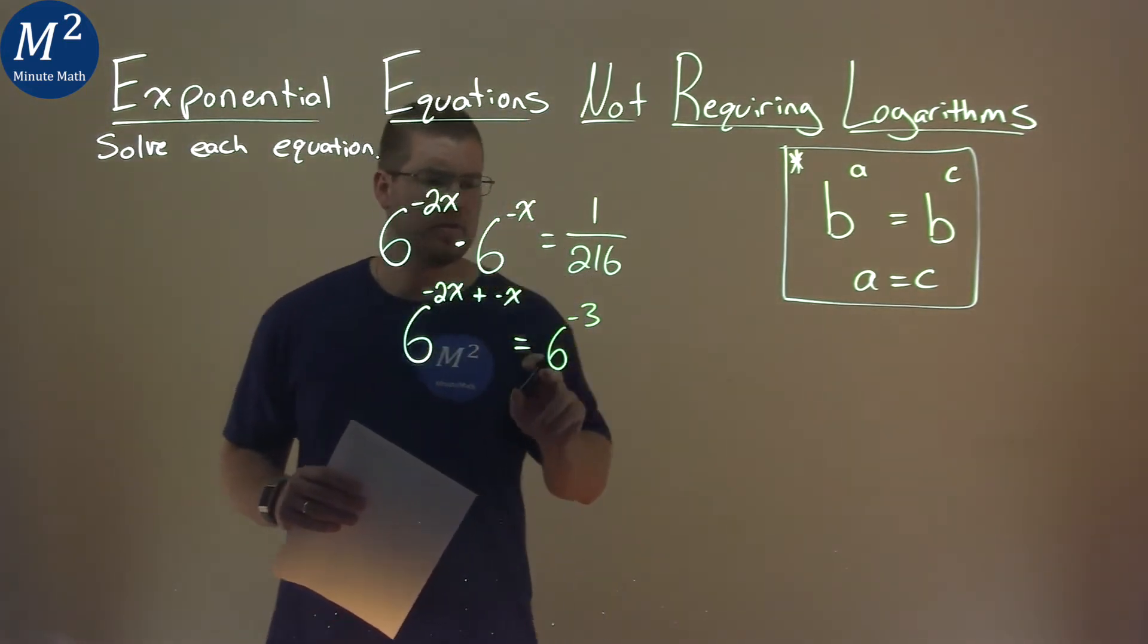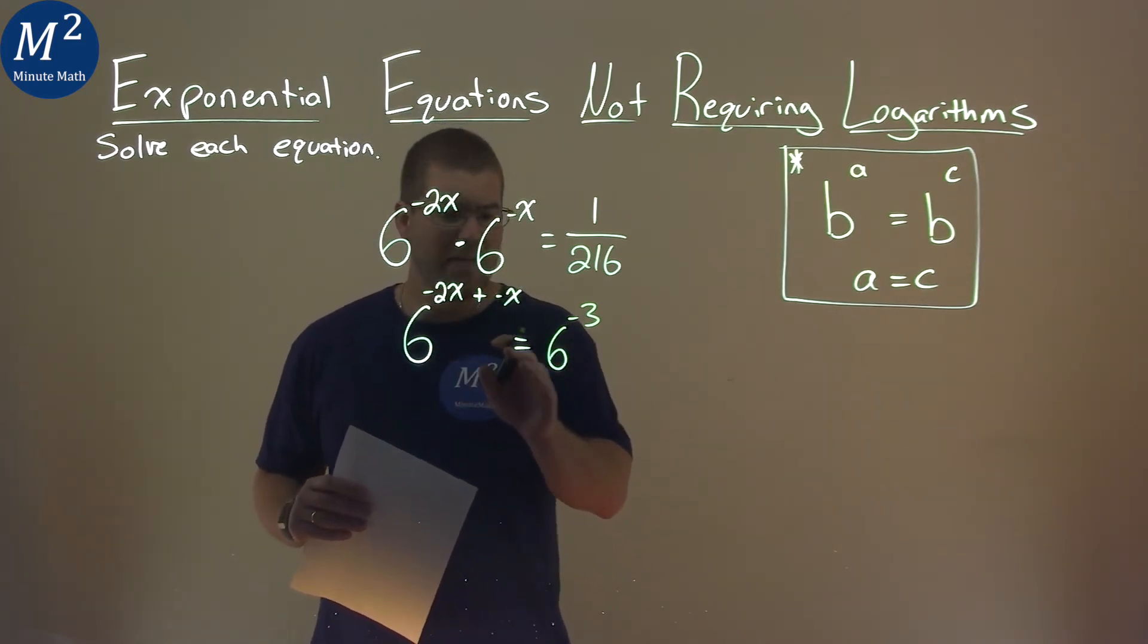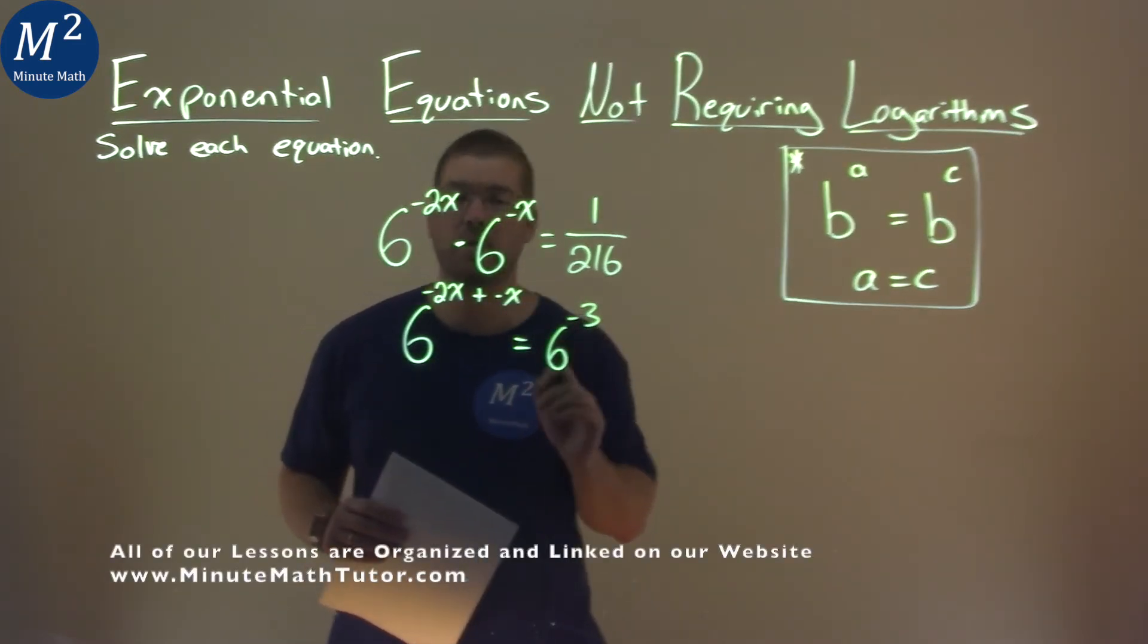We now have the same base here, and when we have that over an equal sign, we can set the exponents now equal to each other.